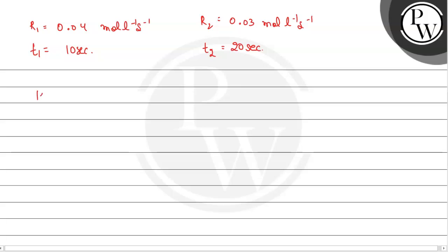So we now use the formula to find rate constant: K equals to 2.303, and here I am using T2 minus T1, so that is 20 minus 10 equals to 10 seconds, so it will be divided by 10 into log of 0.04 upon 0.03.